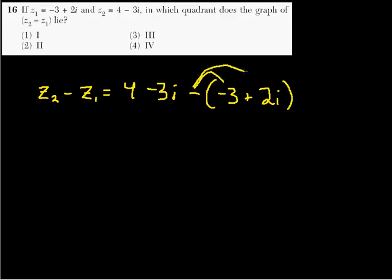Okay? We distribute this negative through the parentheses, and we have 4 minus 3i, plus, because minus minus is plus, 3. And then minus 2i. That should not be there. Let me erase that. Let me get rid of that.